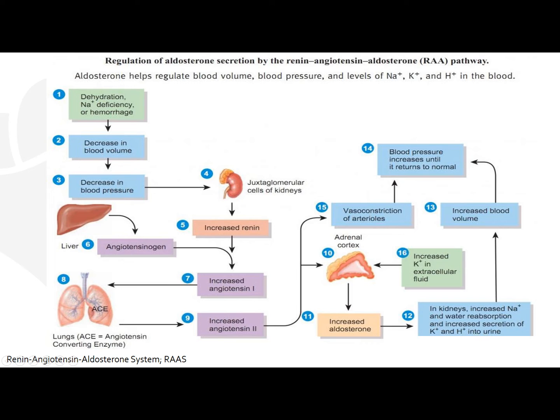What usually triggers this pathway is dehydration, sodium deficiency, or blood loss. This leads to a decrease in blood volume, which, as you recall from the previous slide, results in a decrease in your stroke volume. This can then decrease your blood pressure.